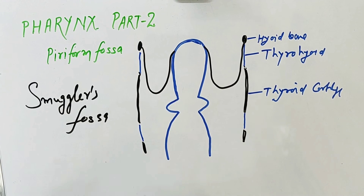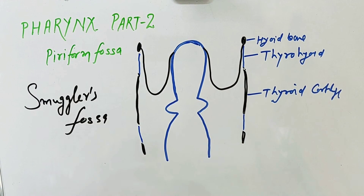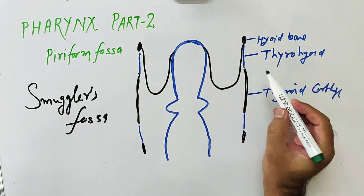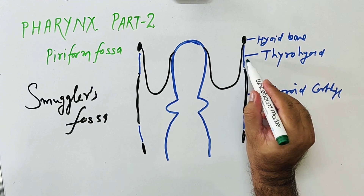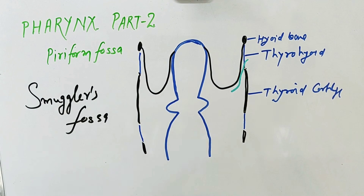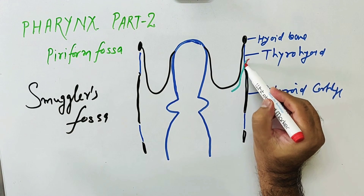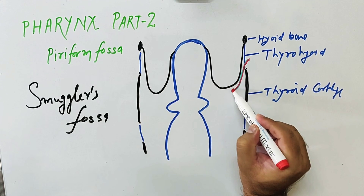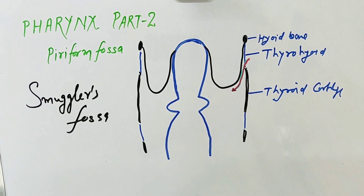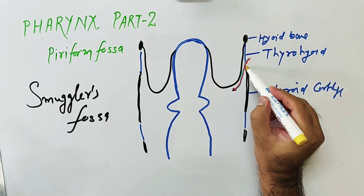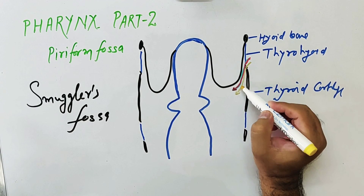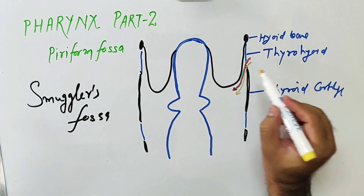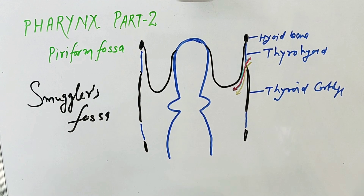Looking at the relations of the piriform fossa, there is one important structure: the superior laryngeal artery. The superior laryngeal artery passes through here. Another important structure is the internal laryngeal nerve. The internal laryngeal nerve and the superior laryngeal artery pass by piercing the thyrohyoid membrane to come into relation with the piriform fossa.